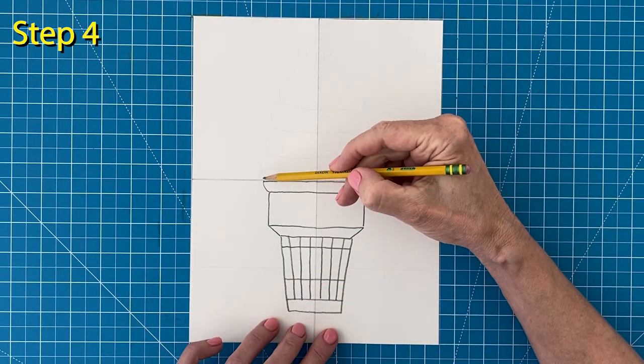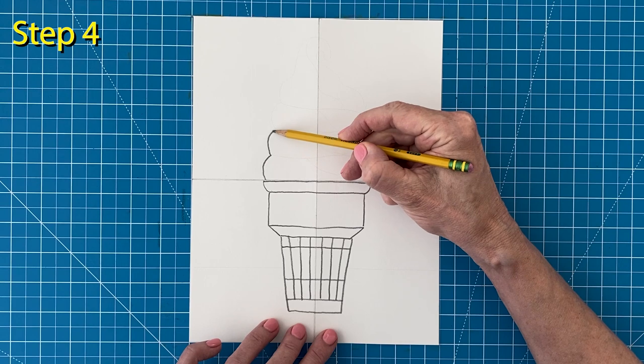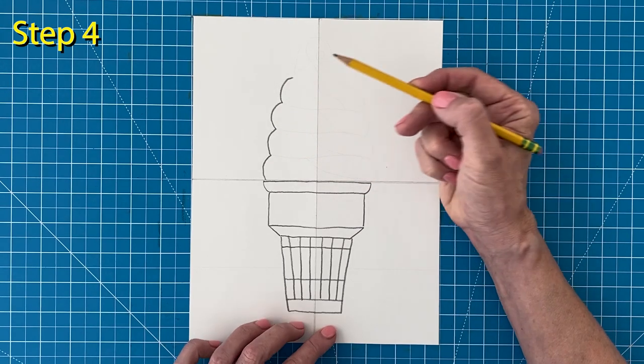Step number four. Start the left side of the ice cream with a line that jumps about four times.